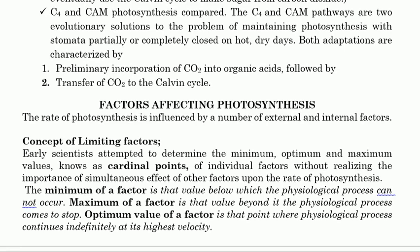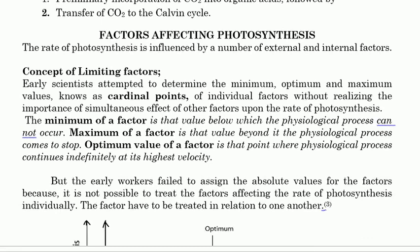So what is the limiting factor? In brief, a limiting factor is that factor which, if you change it, does affect the process of photosynthesis. Scientists initially would look at the minimum, optimum, and maximum values — these are called the cardinal points of an individual factor — without realizing the importance of the simultaneous effect of other factors upon the rate of the process.